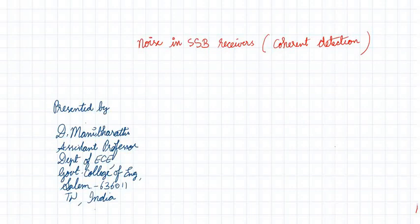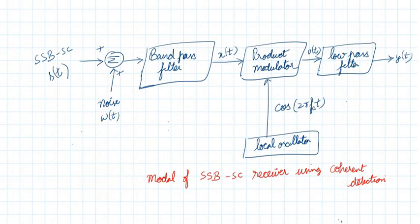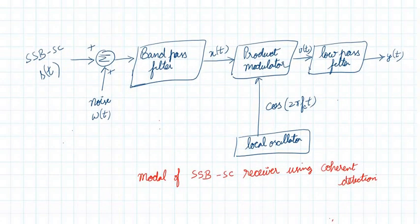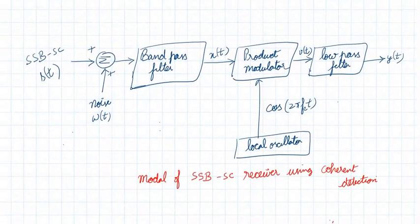Hi and hello to everyone. In this video we are going to discuss about the effect of noise in the single sideband suppressed carrier receiver — particularly we are going to deal with coherent detection. This is the model for the single sideband suppressed carrier receiver using coherent detection.